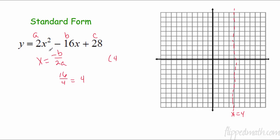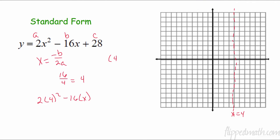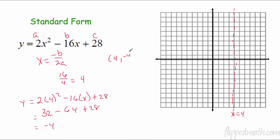Now I'm going to plug 4 back in wherever I see x to get my y-coordinate. If you do this math you should get 32 minus 64 plus 28, which is negative 4. So our vertex is at (4, -4).